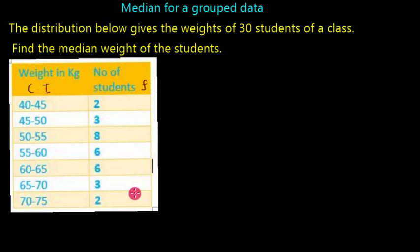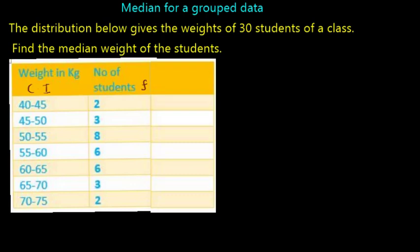To find the median for a group of data, we must know the middle observation. To know the middle observation, we need to calculate the cumulative frequency, which is in short known as CF.